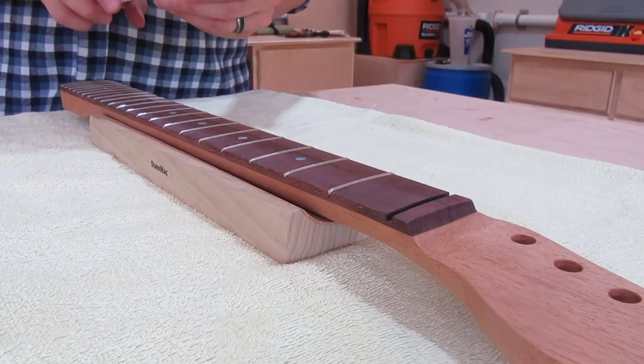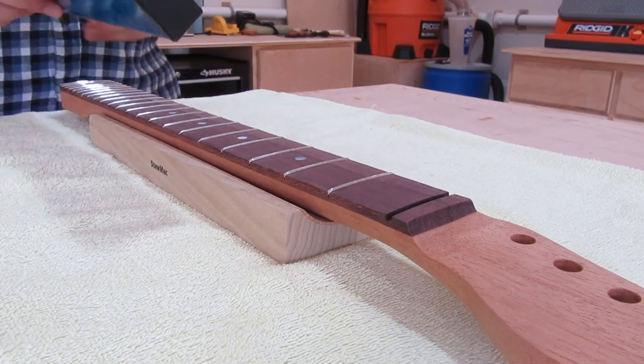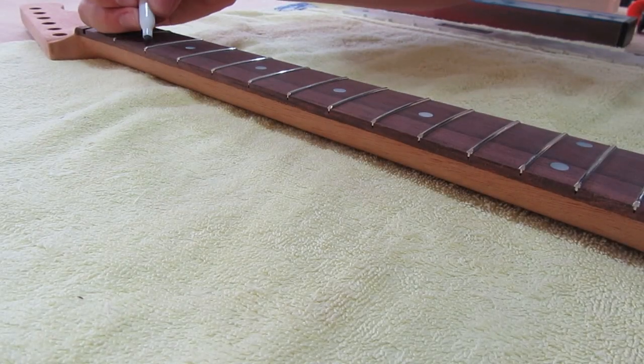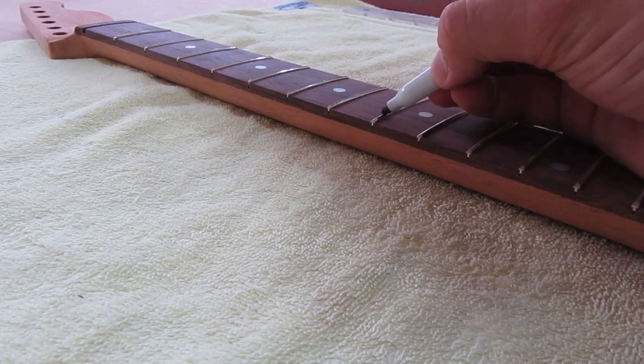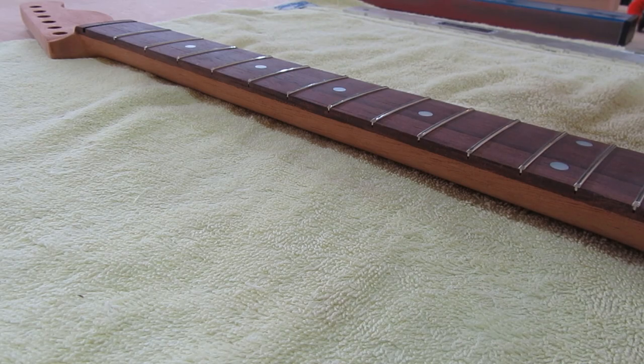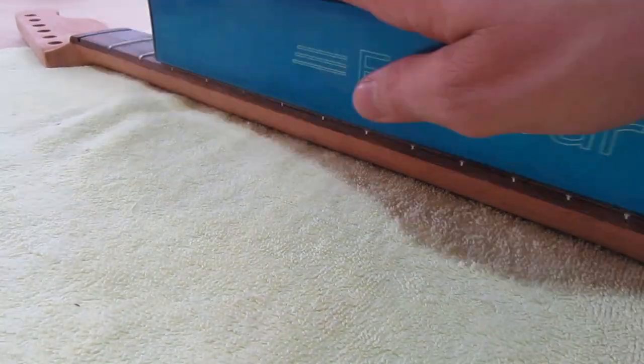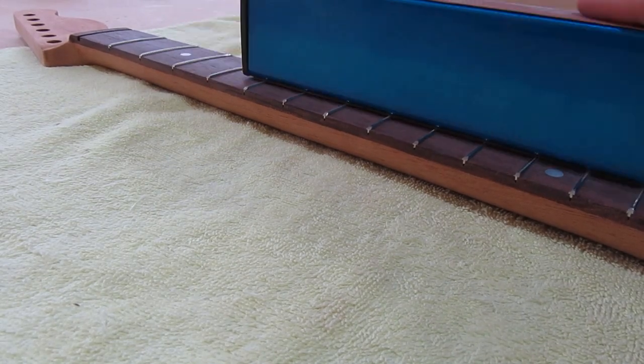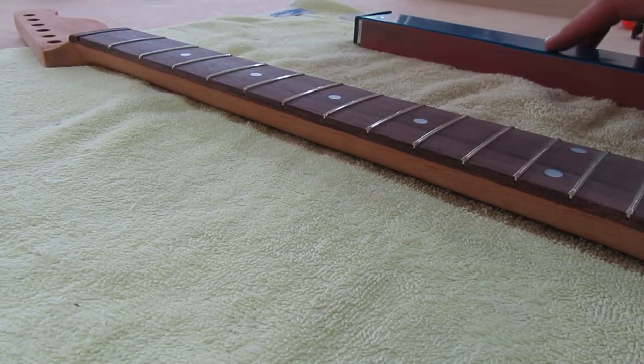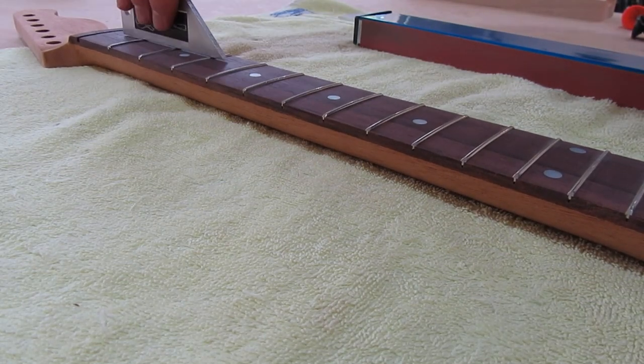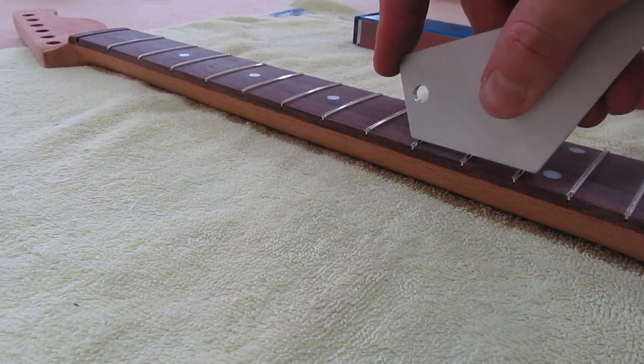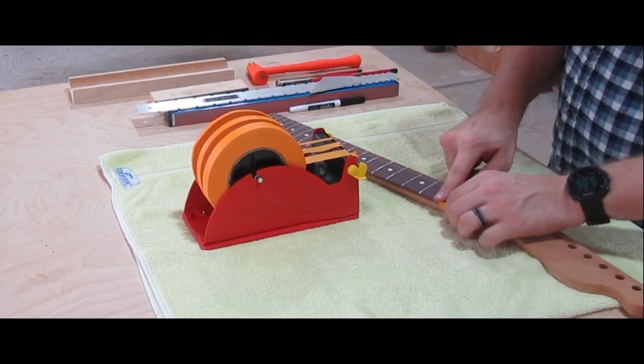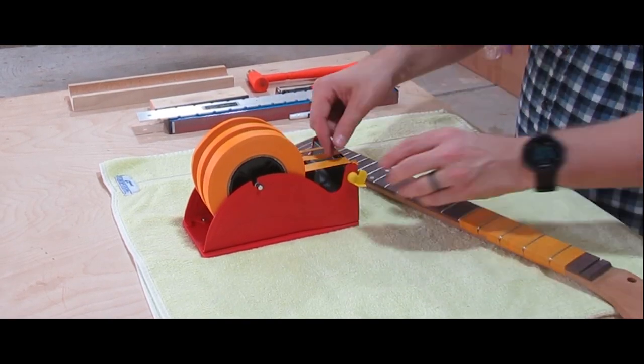Once all that's complete I go through and make sure that the neck is straight. I actually adjusted the truss rod slightly to get the neck perfectly straight and then you go back through and you use a level block with some sandpaper on it to actually level out the top of the frets. A little trick is you can use a permanent marker and mark the top of the frets and then go back with the leveling block and just go over until all the marks are removed and you'll know then that it's perfectly level.